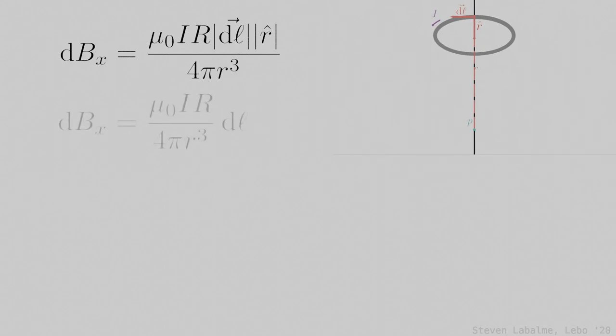Since the magnitude of the dl vector is just dl and the magnitude of r hat is 1, the equation further simplifies. Also move the dl to the end of the equation, as is proper with any variable of integration.